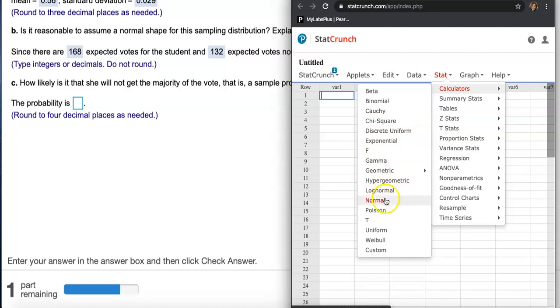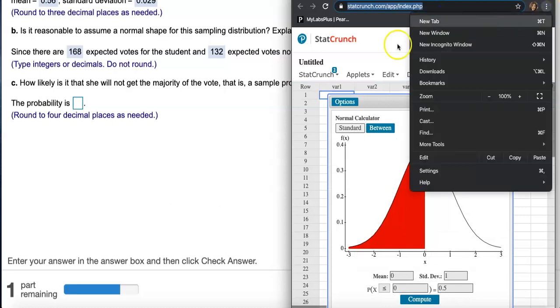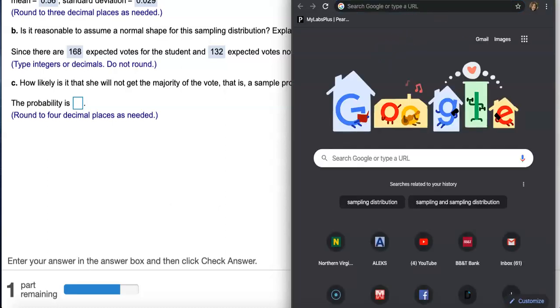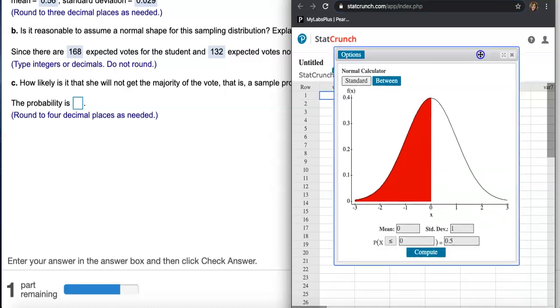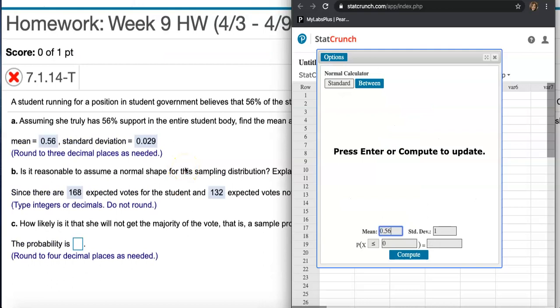Now we got that normal calculator open, and then we're ready to type in the mean. Remember the mean was 0.56 for my example, yours is going to be different. The standard deviation is 0.029.